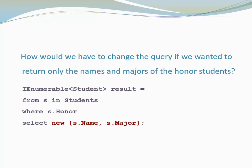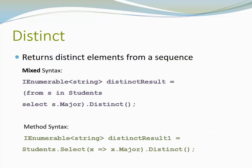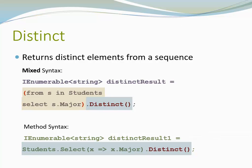There's one last thing I want to introduce in this video: the standard query operator Distinct. Distinct returns distinct elements from a sequence — in other words, it removes duplicates so that each element is included only once. LINQ does not provide a keyword for Distinct that could be used in the declarative query syntax. The only way to express this functionality is by using the method Distinct, which means we are mixing the declarative query syntax with method syntax. Alternatively, we could write the whole query in method syntax.